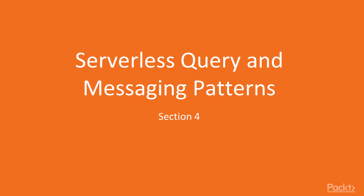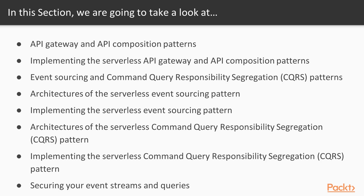These patterns are commonly used for integrating between other microservices and with legacy services, as well as external third-party services. In this section, we are going to look at the API gateway and API composition patterns and how these can be implemented in a serverless environment. We will then discuss event sourcing and command query responsibility segregation, or CQRS patterns.